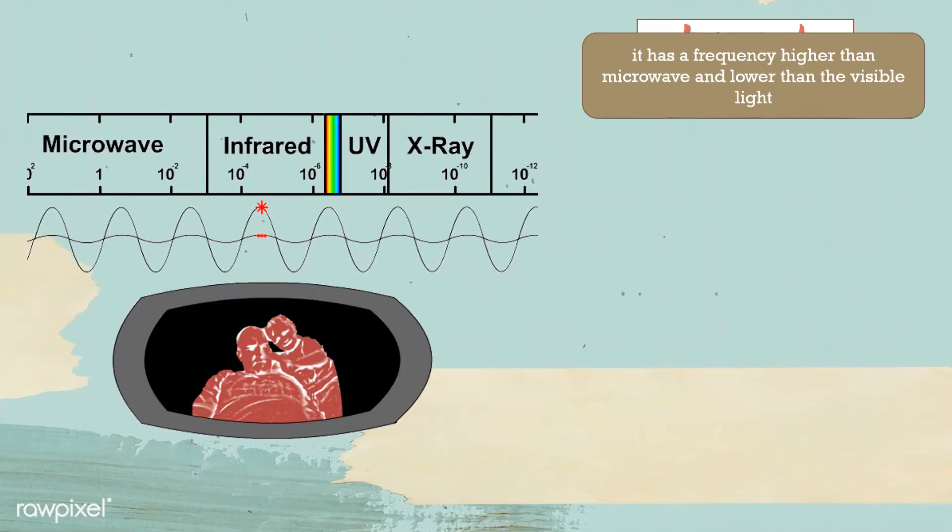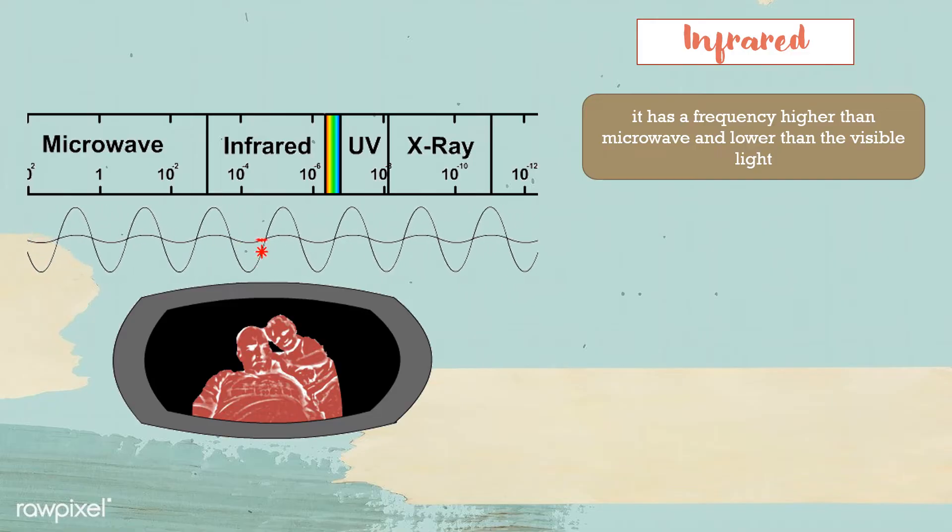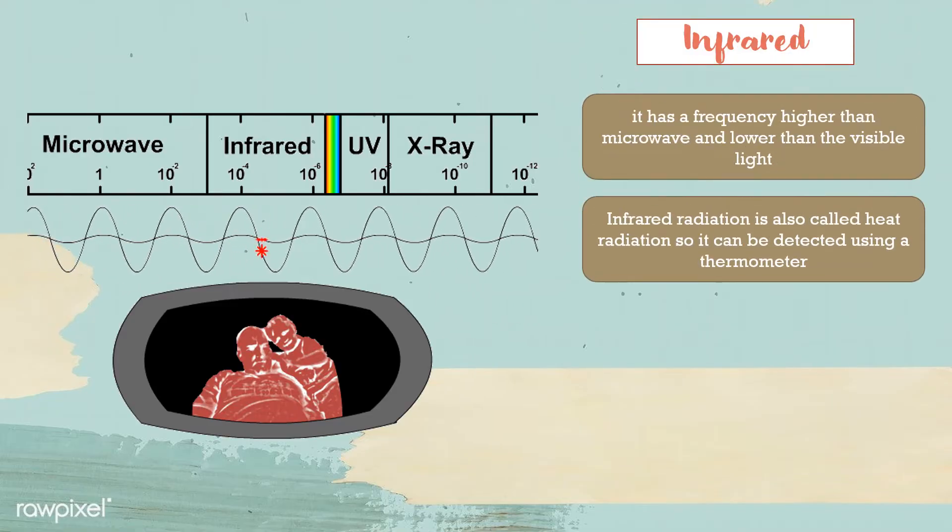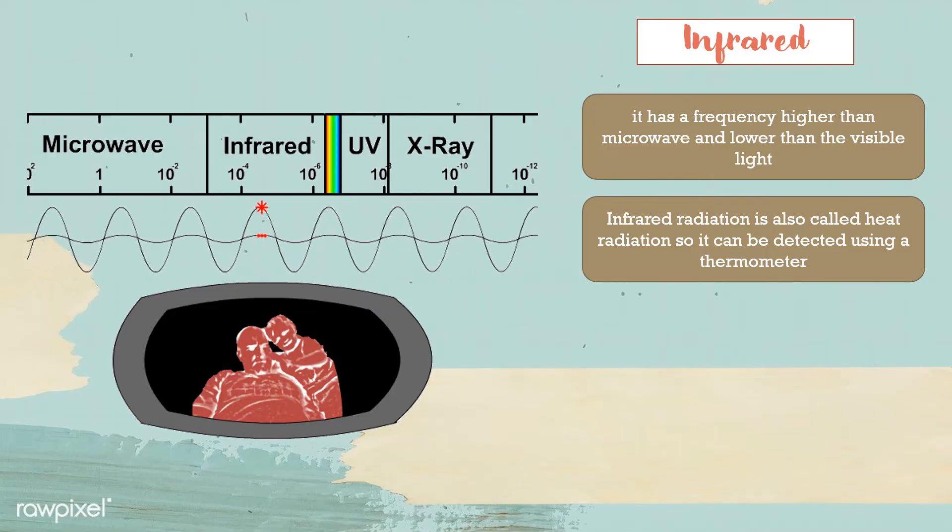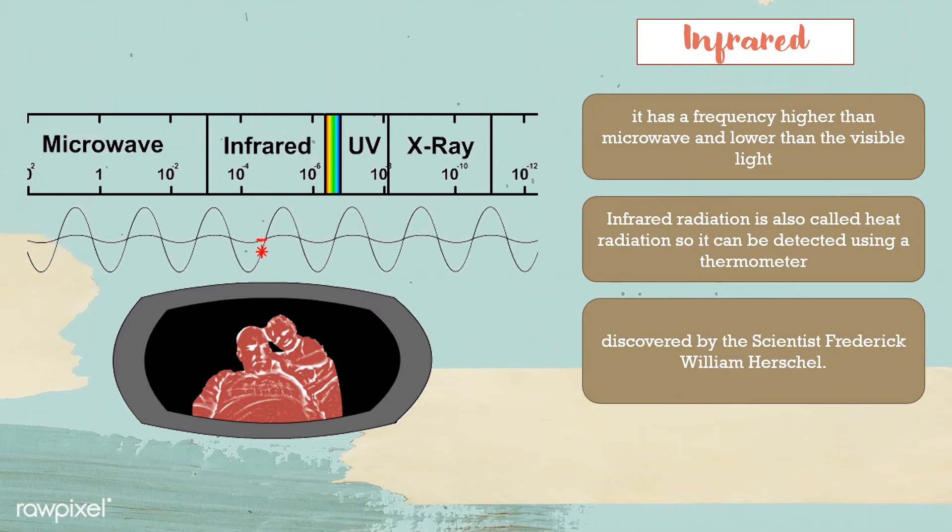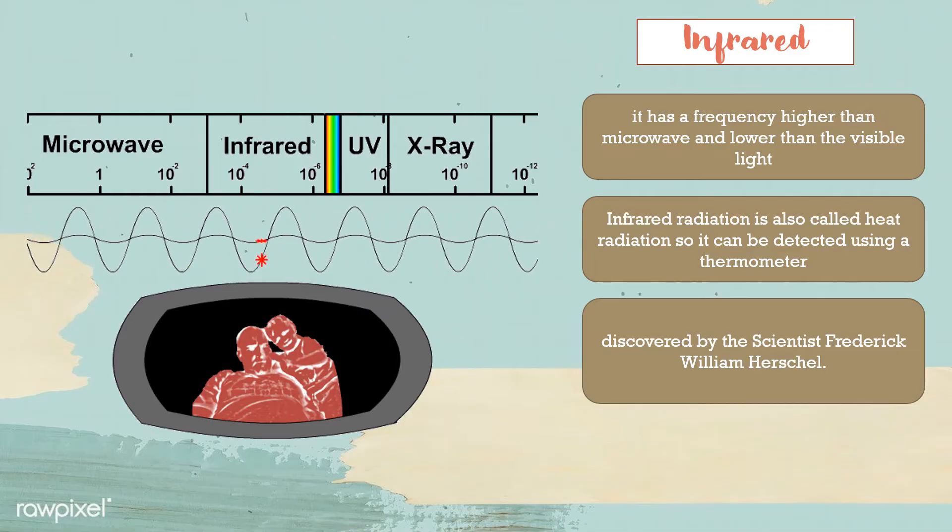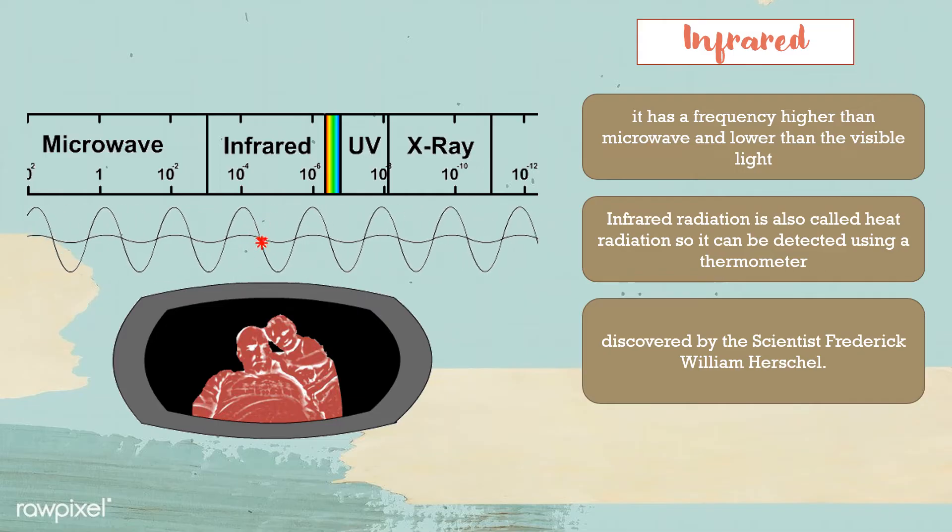The third type is the infrared. It has a frequency higher than microwave and lower than visible light. Infrared radiation is also called heat radiation so it can be detected using a thermometer. It was discovered by the scientist Frederick William Herschel. He noticed that there is an increase of temperature in the thermometer beyond the red part of the spectrum when he is trying to measure the air temperature and that is the infrared.